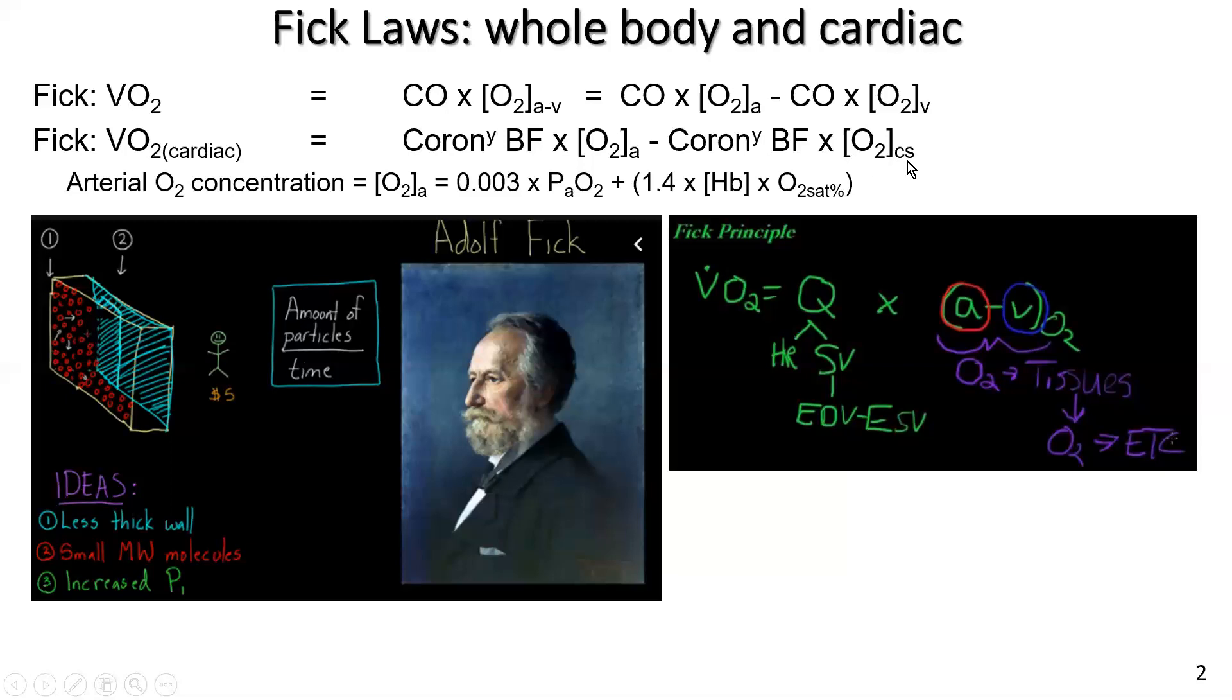However, the vein, the venous system in the heart is represented by oxygen concentration in the coronary sinus, which is equivalent to mixed venous blood for the whole body. So that's the formula for the heart.